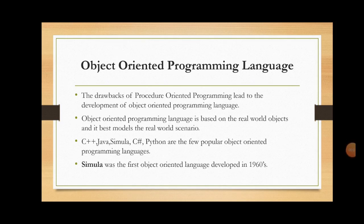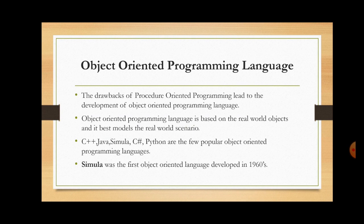Next is object-oriented programming language. The drawbacks of procedure-oriented programming led to the development of object-oriented programming language. Here, real-world objects are the basis of object-oriented programming, and it is best suited to solve real-world problems. C++, Java, Simula, C#, and Python are popular object-oriented programming languages used today. Simula is considered the first object-oriented programming language, developed in 1960. In our subsequent sessions, we will discuss more on object-oriented programming using Java.